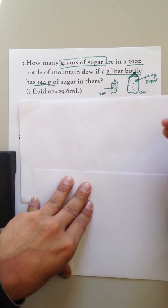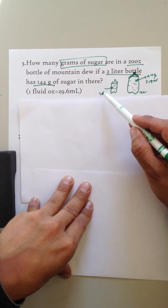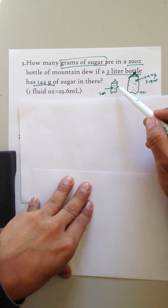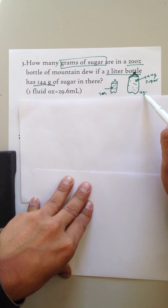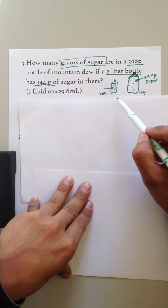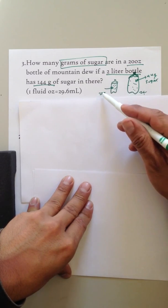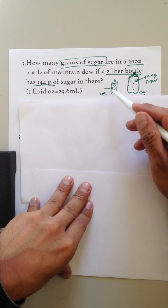We have ounces, though, so we have to do a comparison. We have to compare apples to apples. So let's convert these ounces to liters, and then we can set up a ratio. We know that there's this many for 2 liters. How many grams of sugar per however many liters we have here?